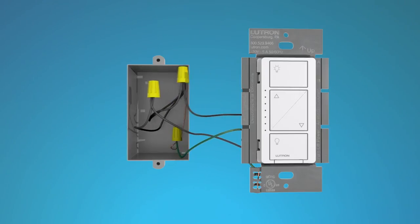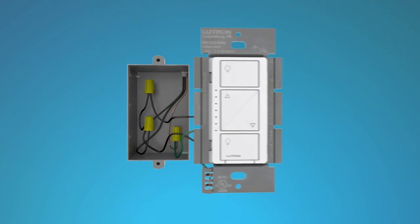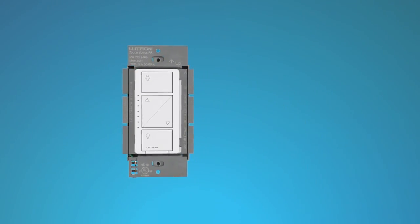Tuck the wires back into the wall box. Align the Caseta Wireless Dimmer with the wall box and mount it using the screws that came with the dimmer. Now you can replace the wall plate.